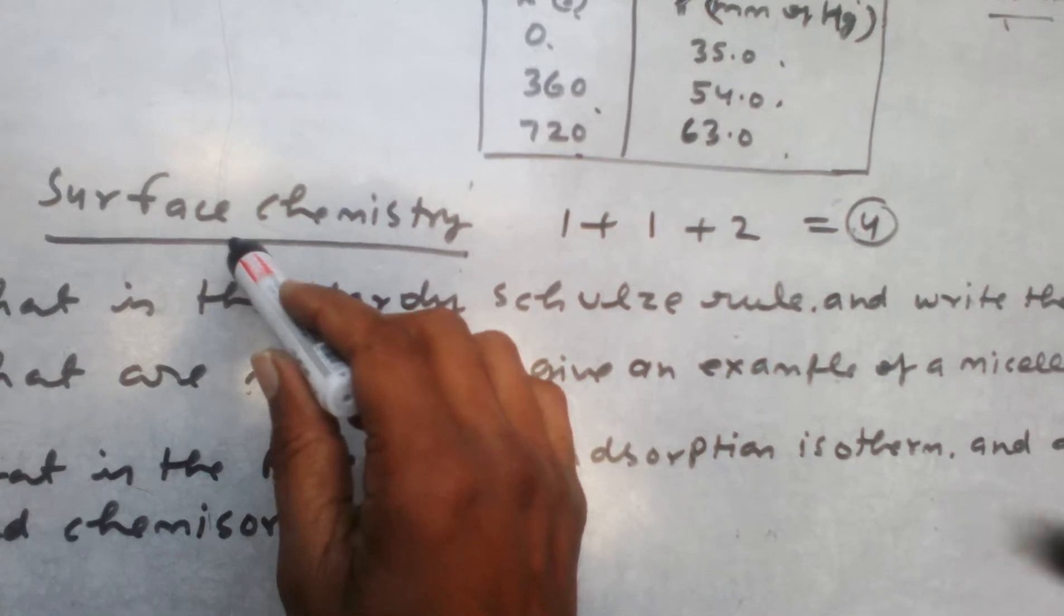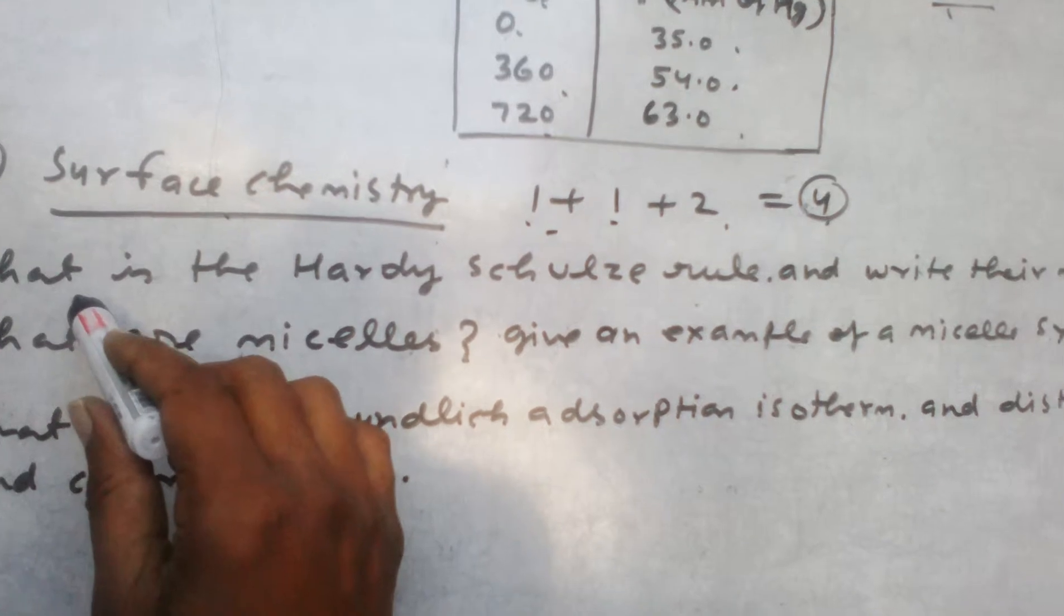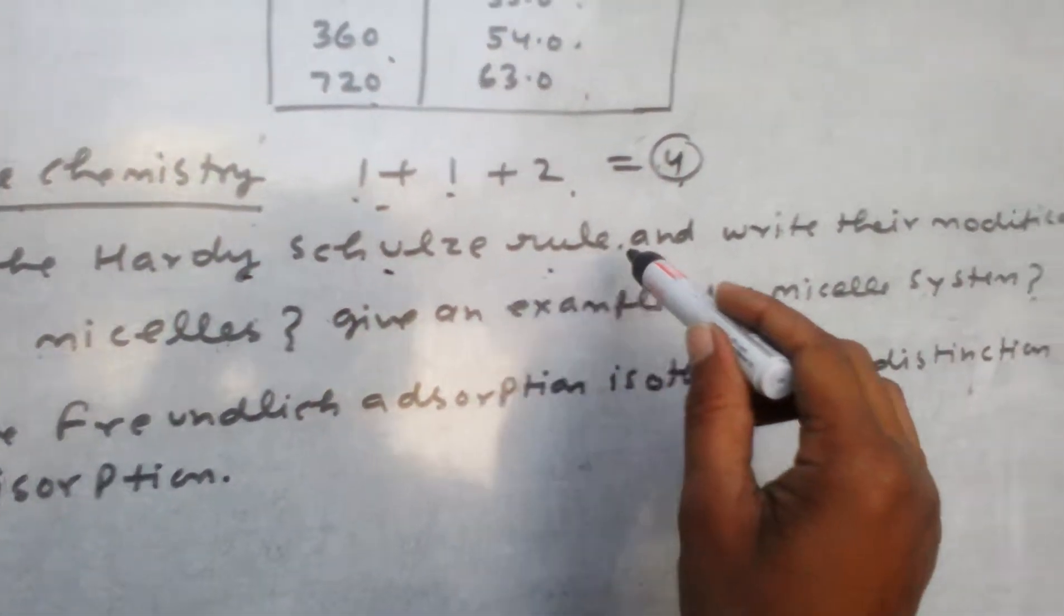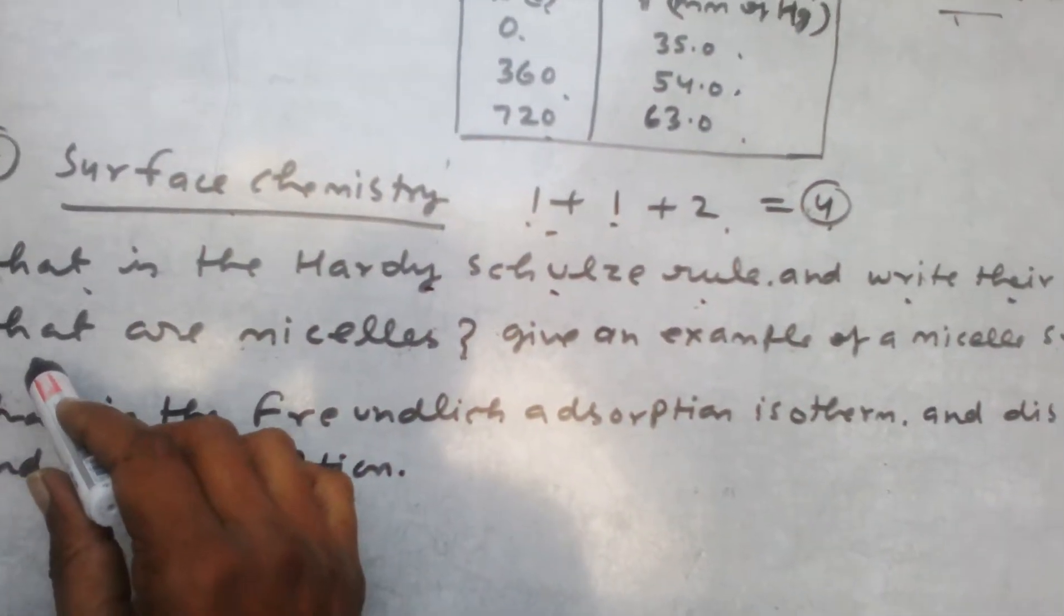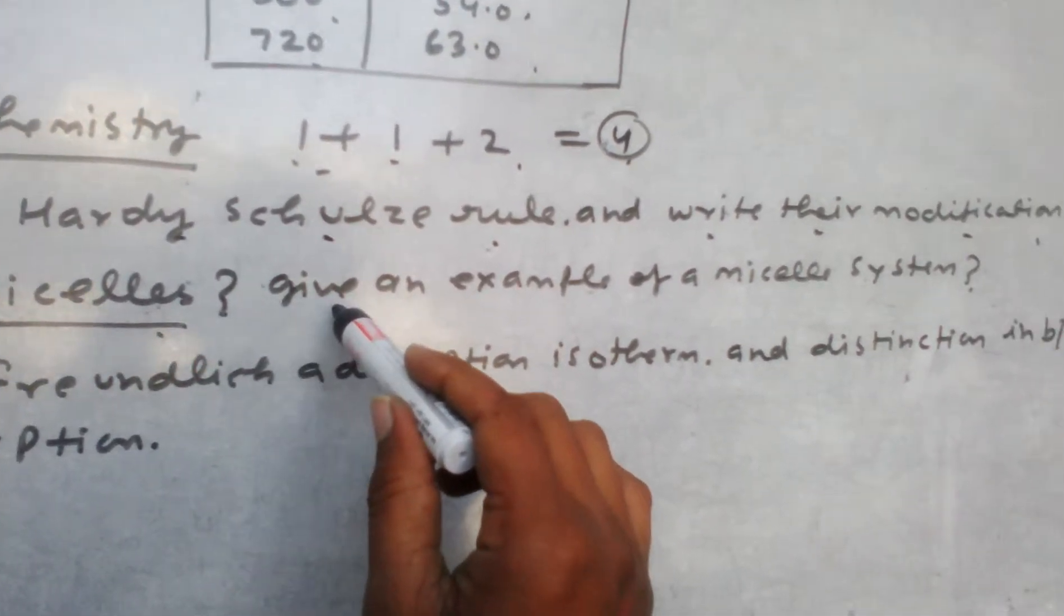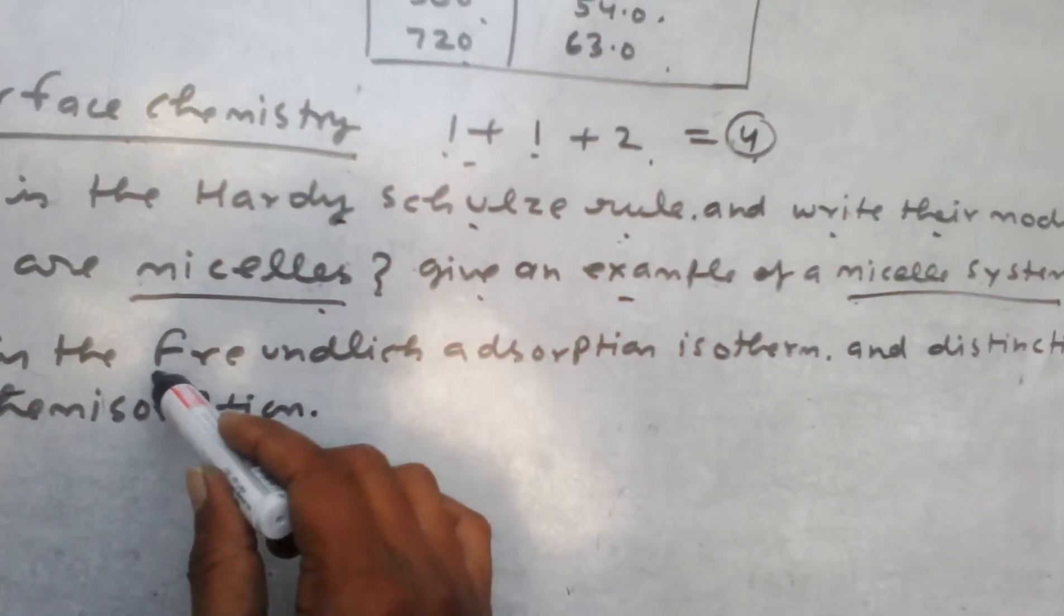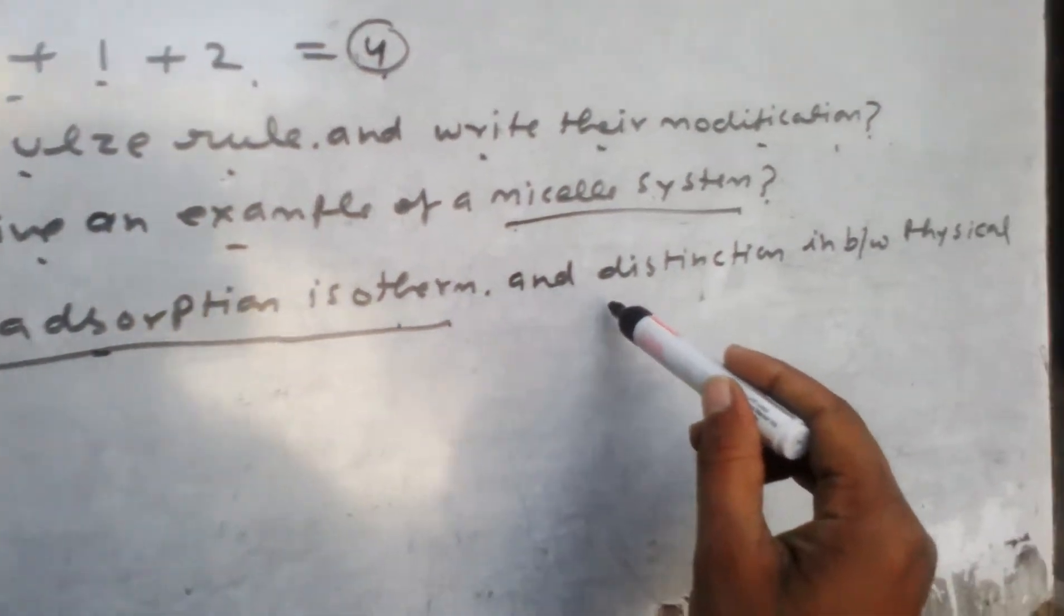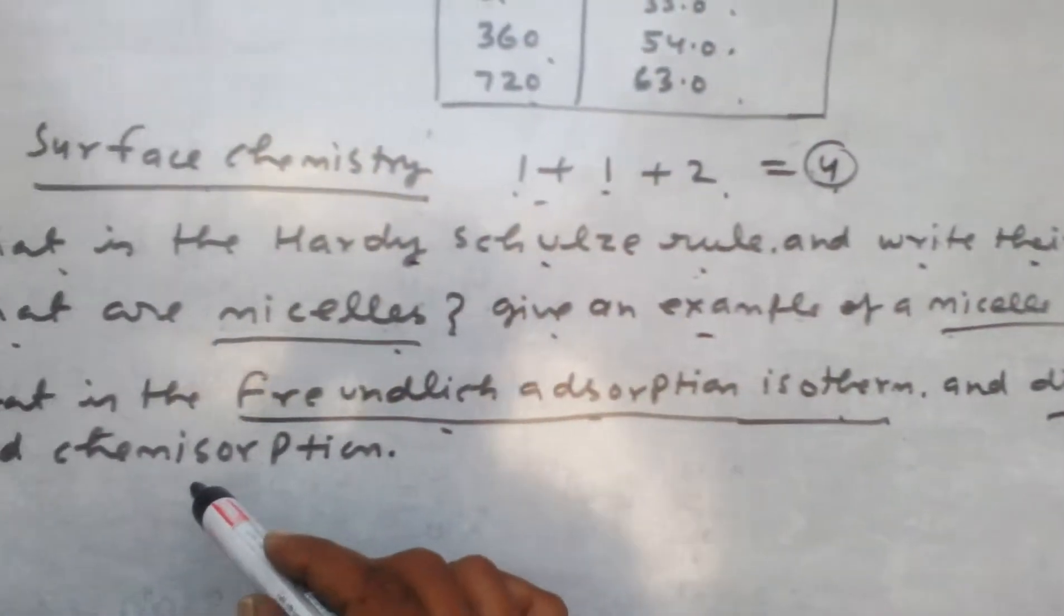Surface chemistry question: What is Hardy's rule and write its modification also. Second question: what are micelles? How do they become associated colloids? Give an example of micelle system. What is Freundlich adsorption isotherm? Explain the distinction between physical adsorption and chemical adsorption.